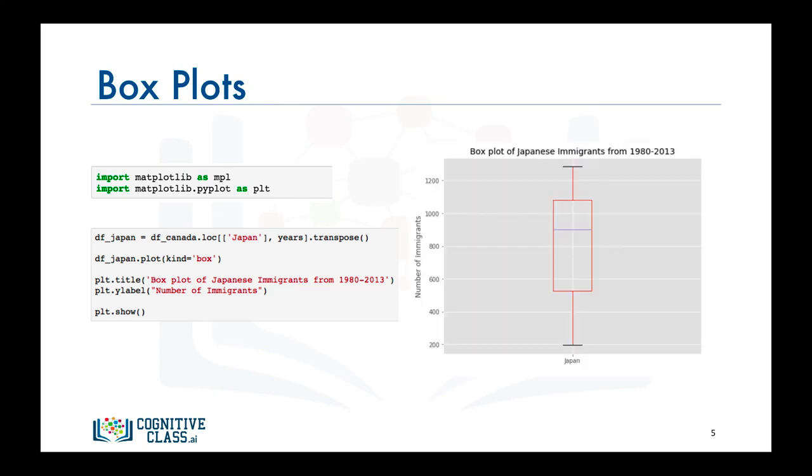And there you have it, a box plot that provides a pleasing distribution of Japanese immigration to Canada from 1980 to 2013.